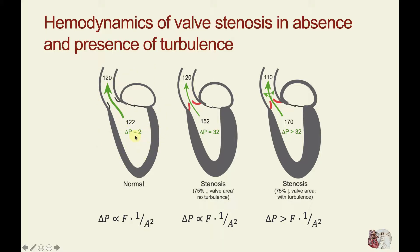Using the same numbers as before, under normal conditions we assume a very small pressure gradient of 2 millimeters of mercury. If we reduce the valve orifice area to one-fourth its normal cross-sectional area with no turbulence occurring, then delta P would equal 32 — increased 16-fold because one-fourth of the area squared gives a factor of 16. So the pressure gradient becomes 152 minus 120, instead of 122 minus 120.